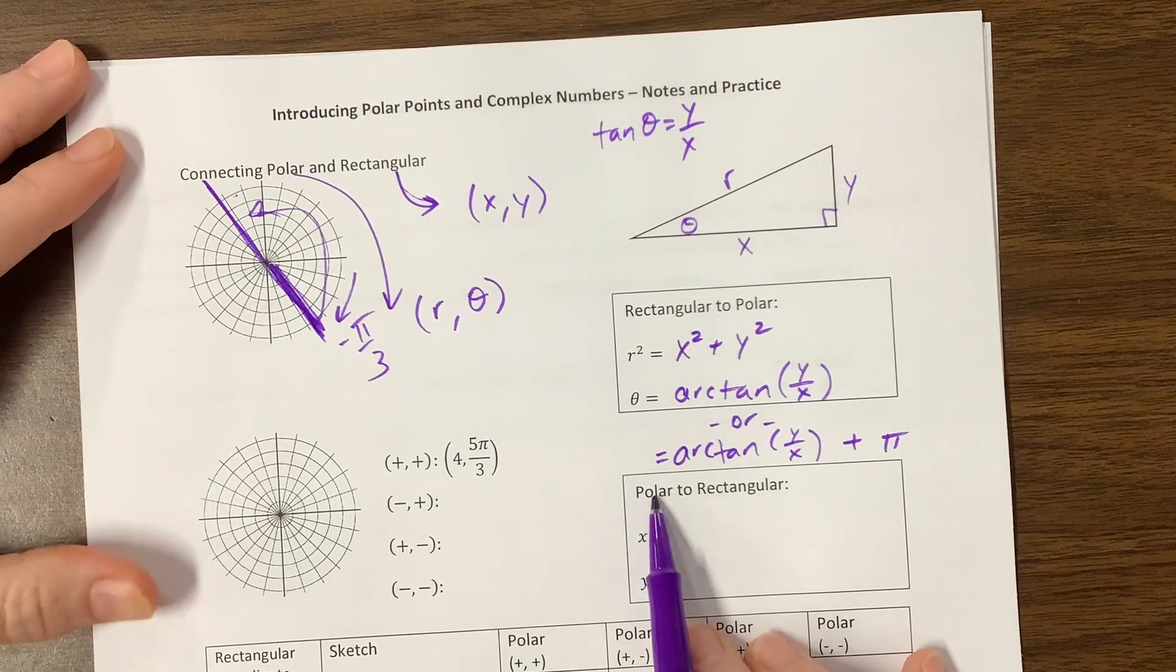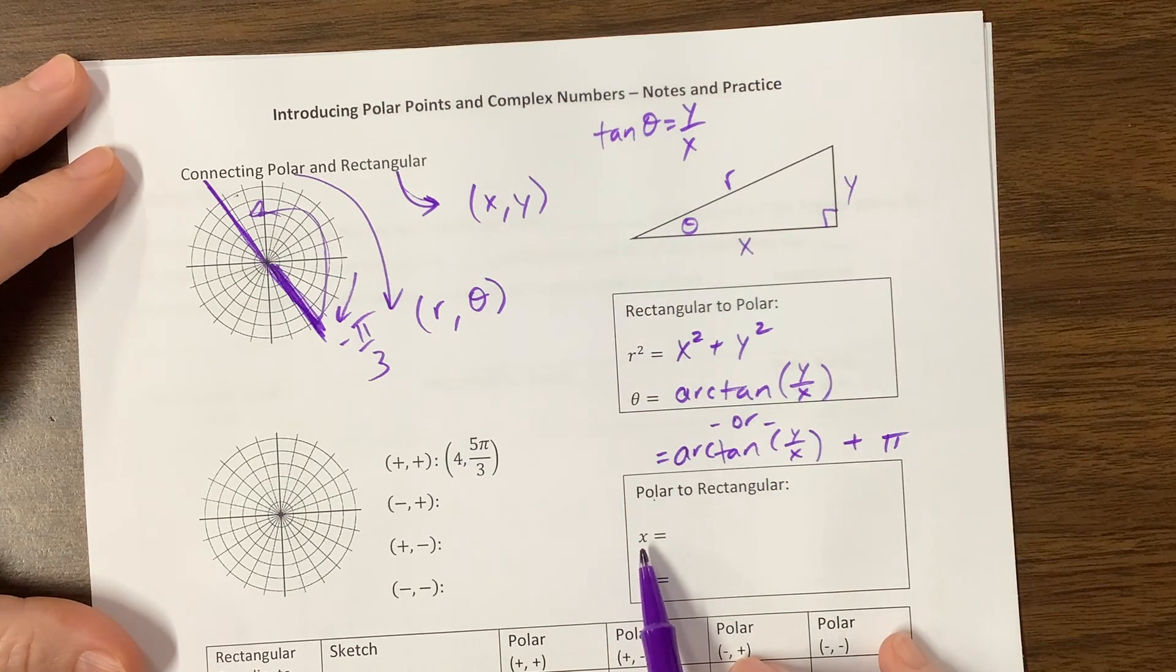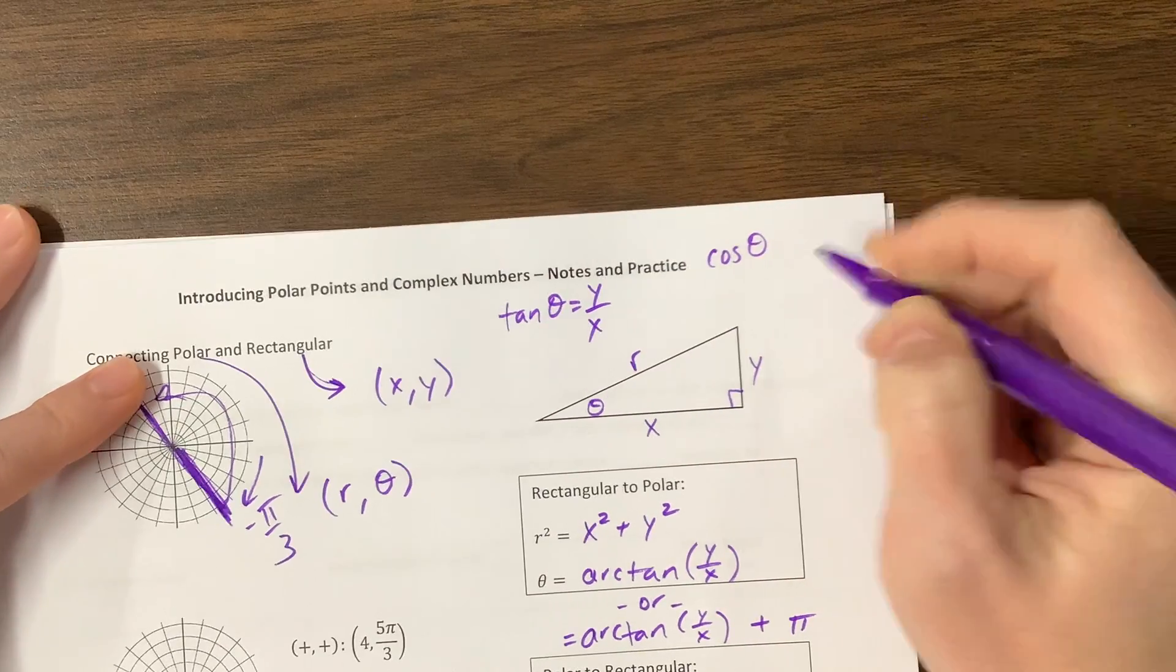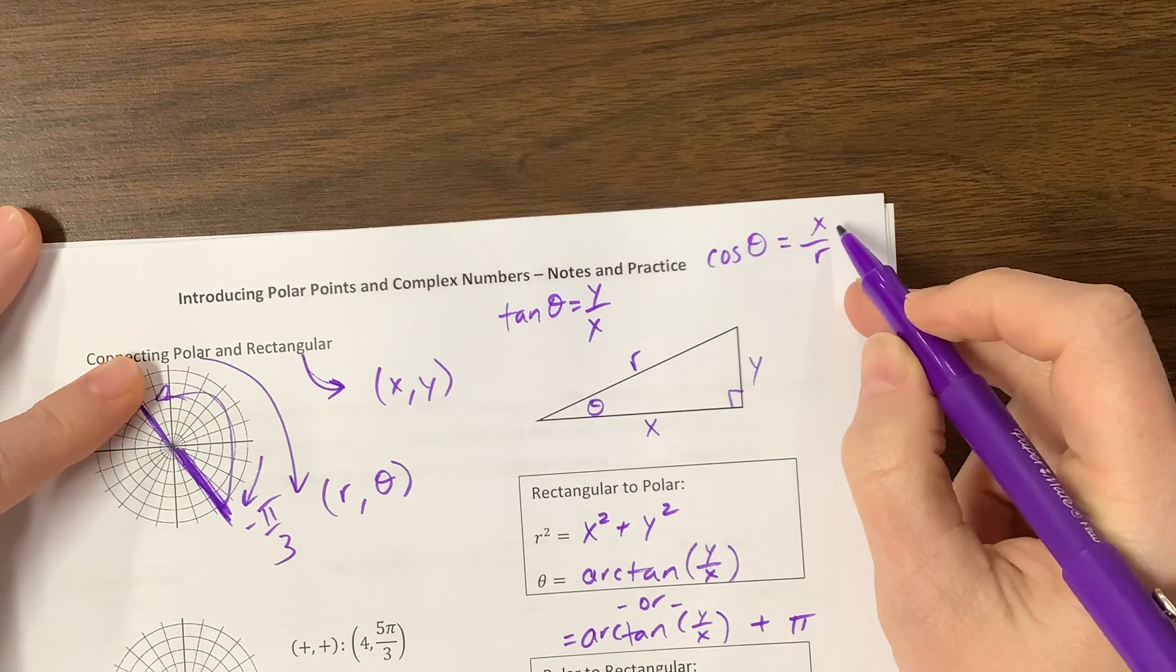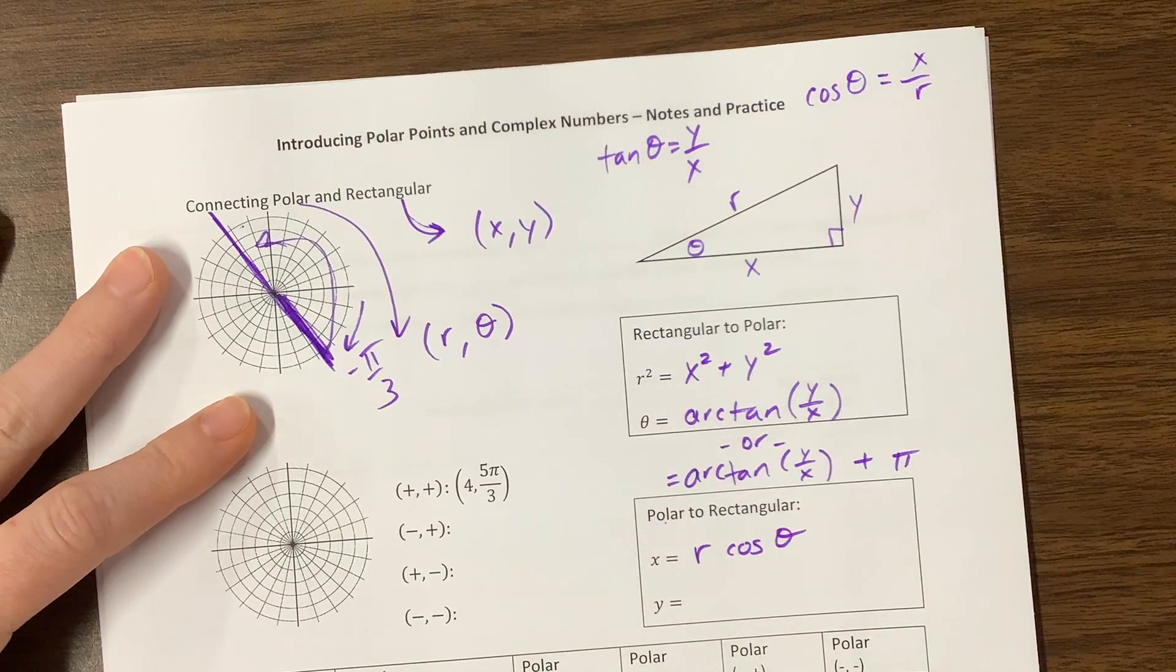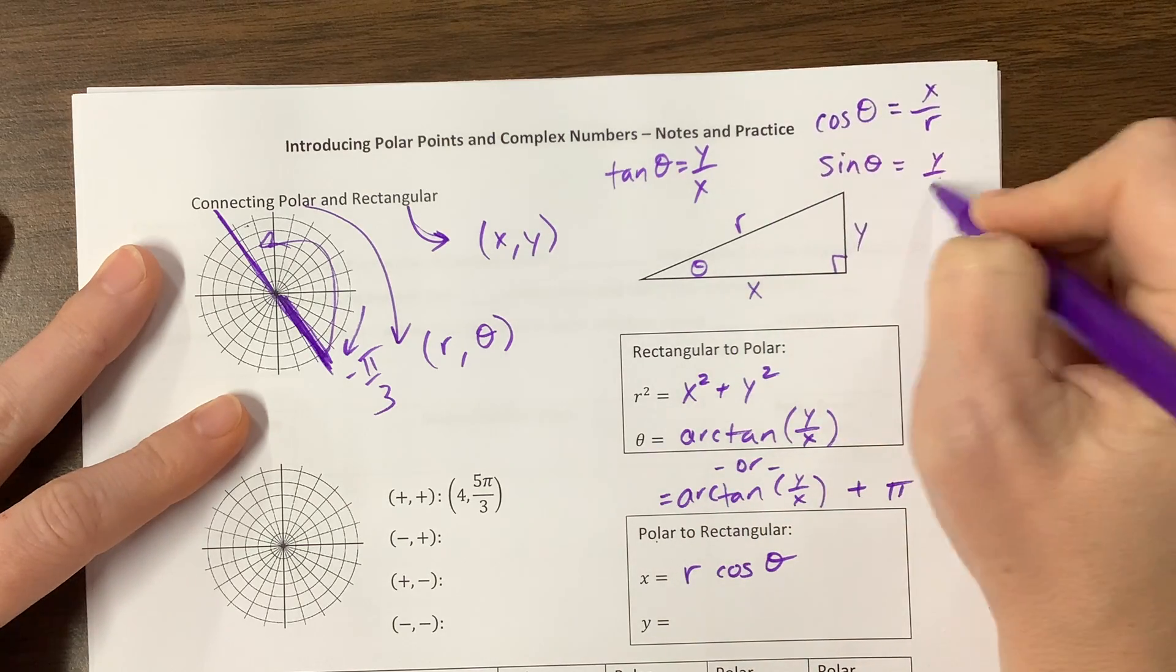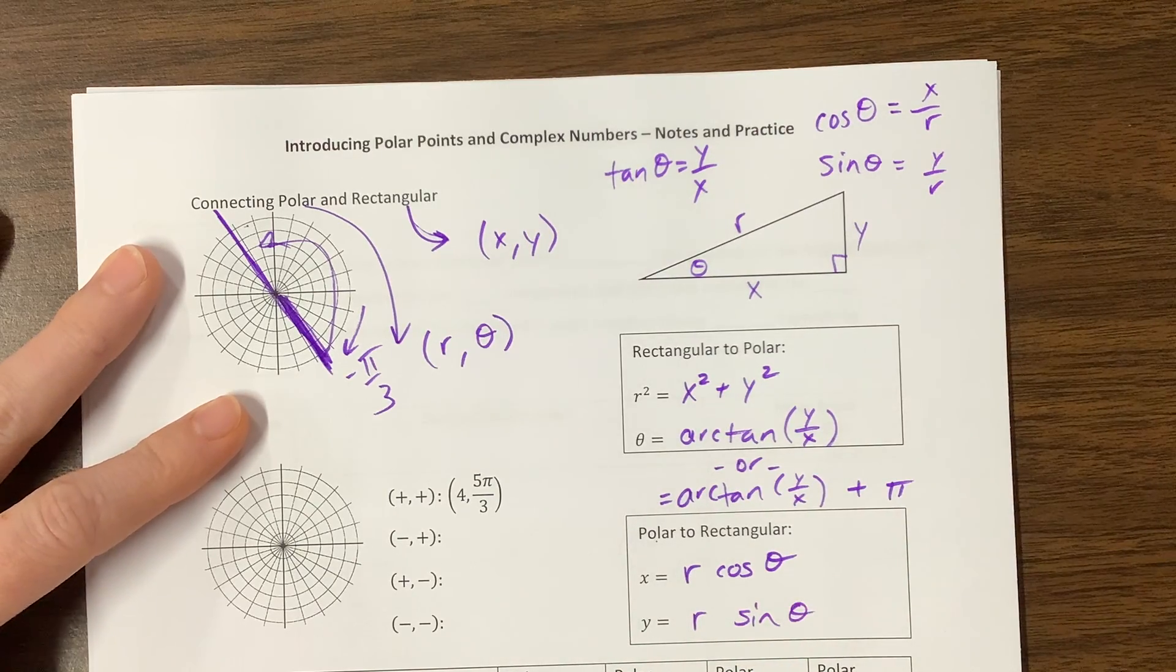Okay, and then polar to rectangular, that means you have r, you have theta, and you want to figure out x and y. Well, we know that cosine of theta, can you see that, yes, is equal to x over r. So, therefore, x itself would just be equal to r cosine theta. Okay, likewise, we can say that sine of theta is going to be y over r. And so, y is equal to r sine theta. I don't know why I put that big of a gap there, but there you go.